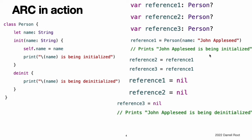Because the new Person instance has been assigned to the reference1 variable, there is now a strong reference from reference1 to the new Person instance. Because there is at least one strong reference, ARC makes sure that this Person instance is kept in memory and is not deallocated. If you assign the same Person instance to two more variables, two more strong references to that instance are established — now there are three strong references to this single Person instance. If you break two of these strong references by assigning nil to two of the variables, a single strong reference remains and the Person instance is not deallocated. ARC does not deallocate the Person instance until the third and final strong reference is broken, at which point it is clear that you are no longer using the Person instance.